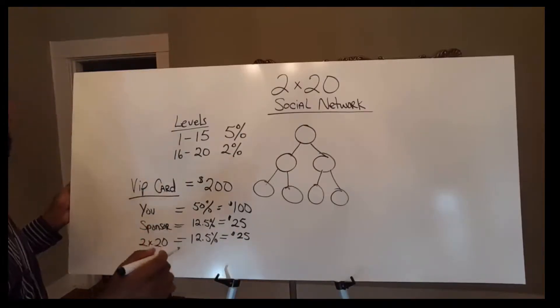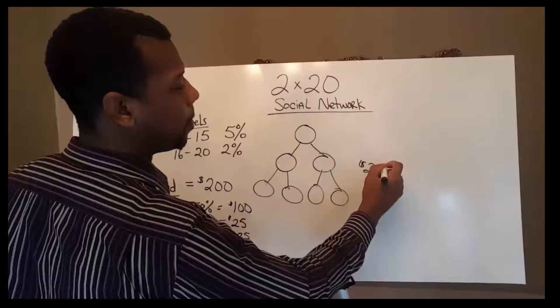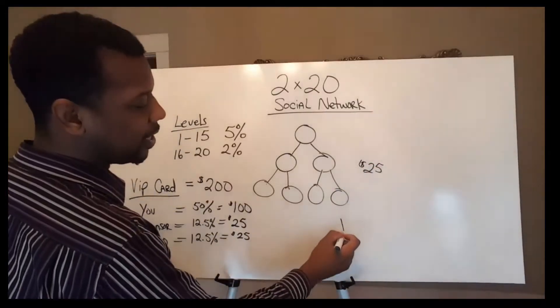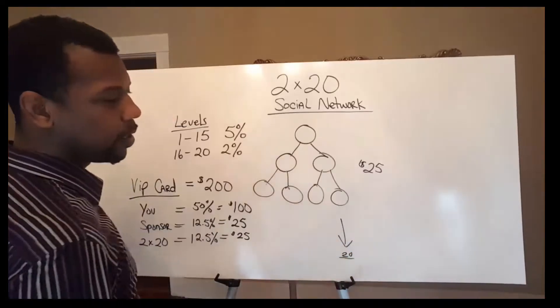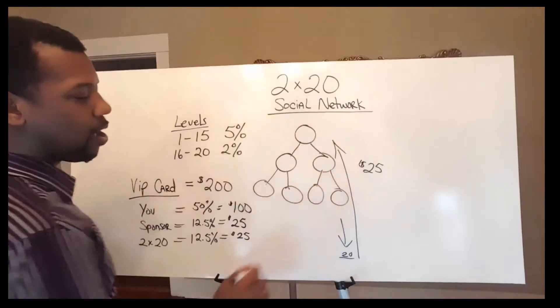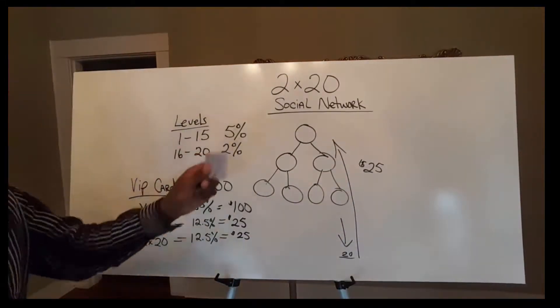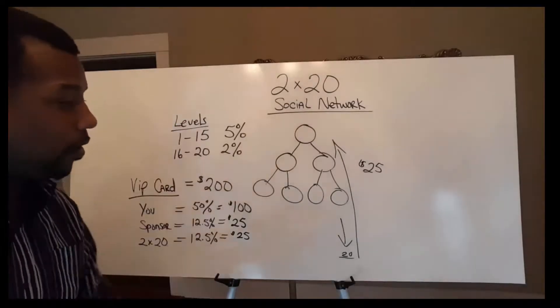They're going to take $25. Let's say it's somebody down here on your 20th level. They're going to take that $25 and they're going to sprinkle it throughout that 2x20 social network. That's just one card.